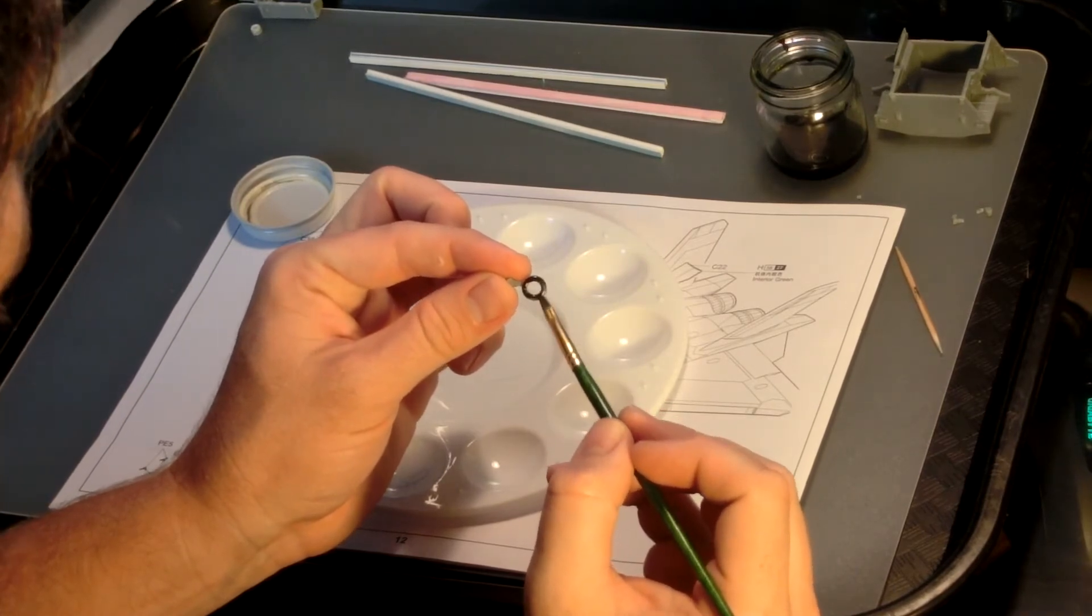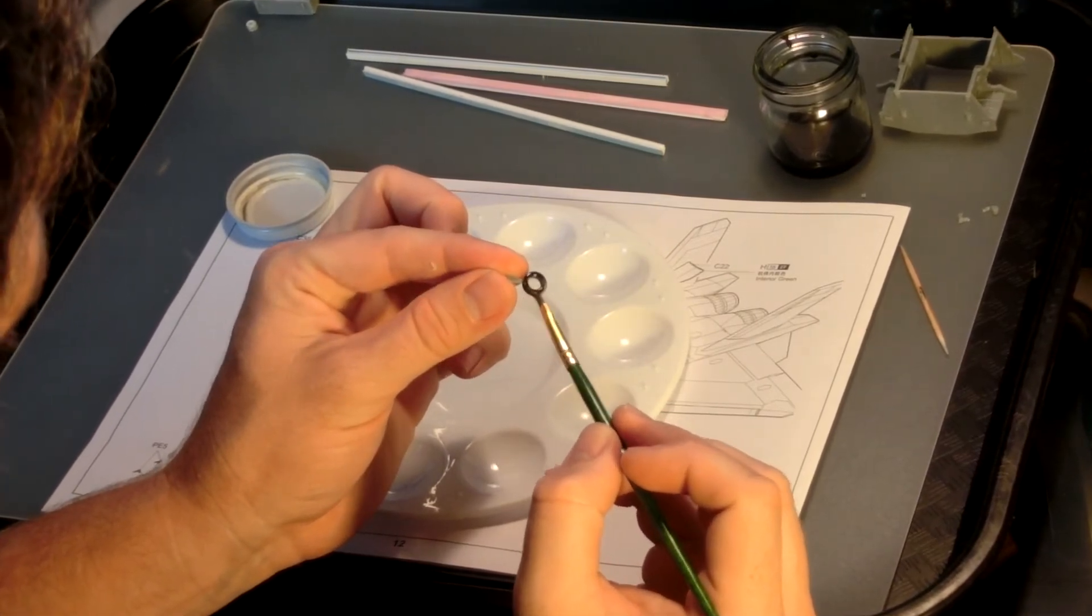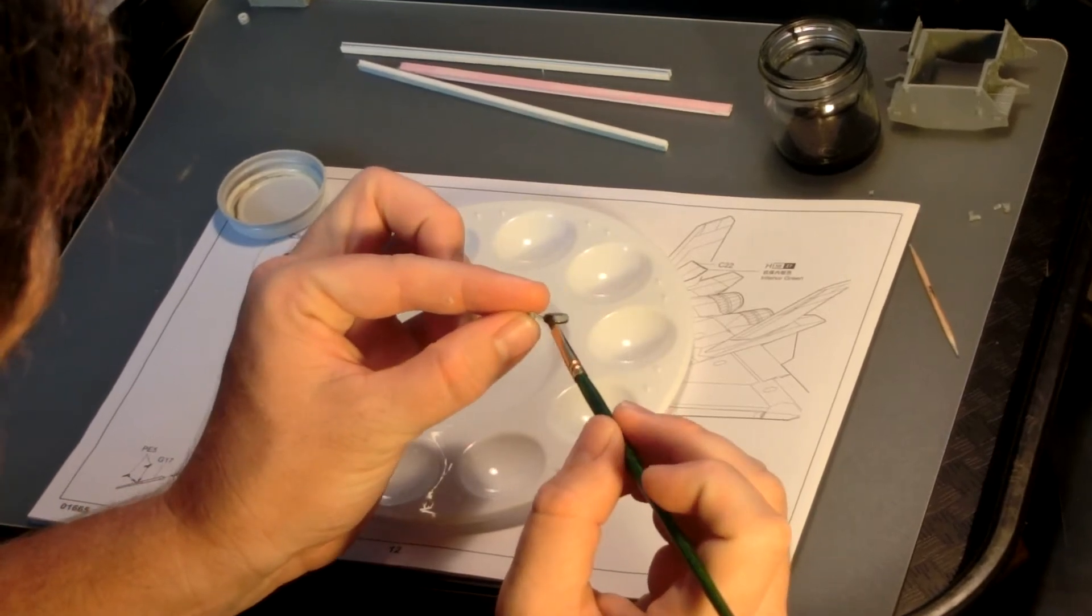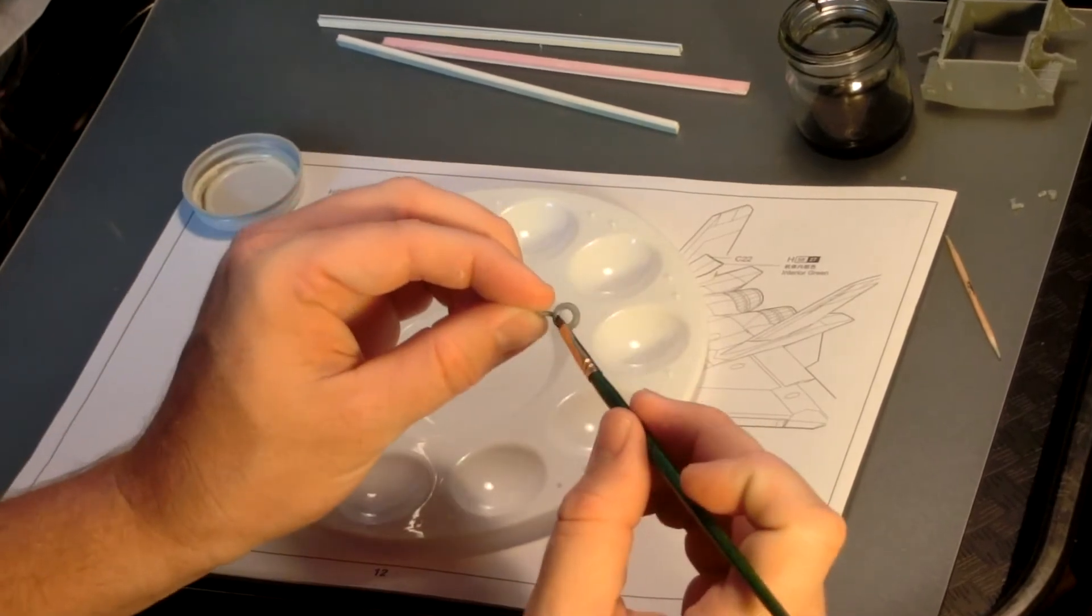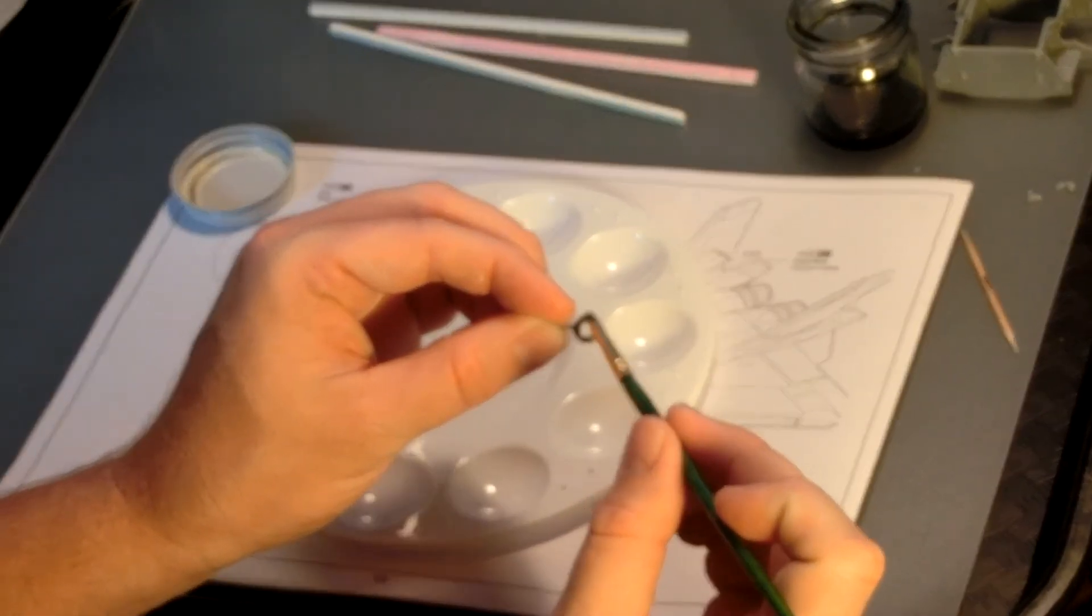To begin, don't dunk your paintbrush all the way down into the jar, getting paint all the way to the top of the bristles or even on the handle. Just dab a little bit of paint onto your brush and get to work.